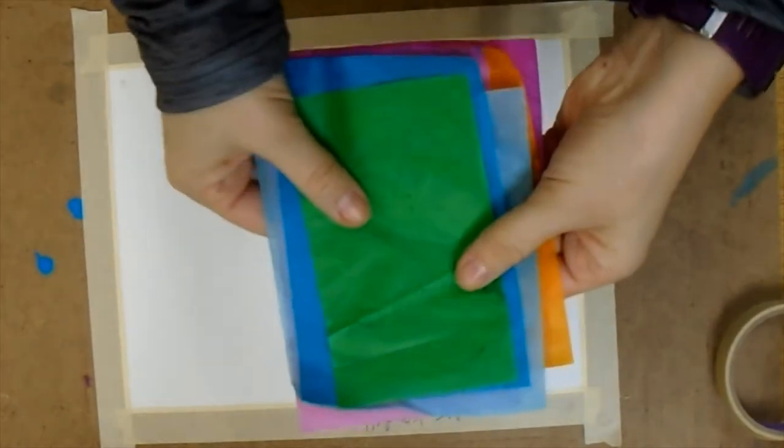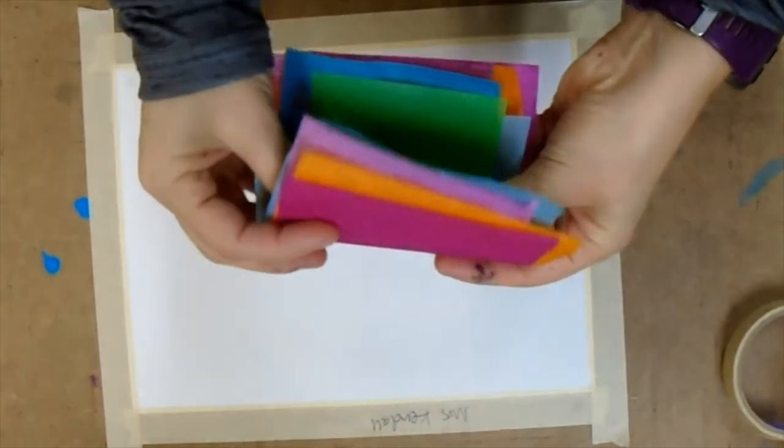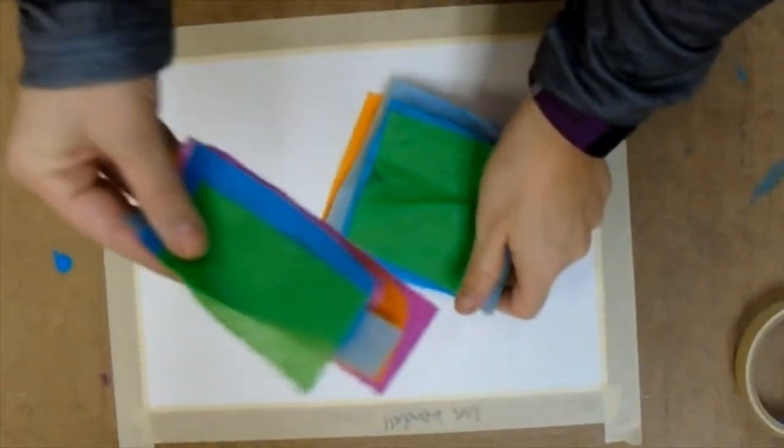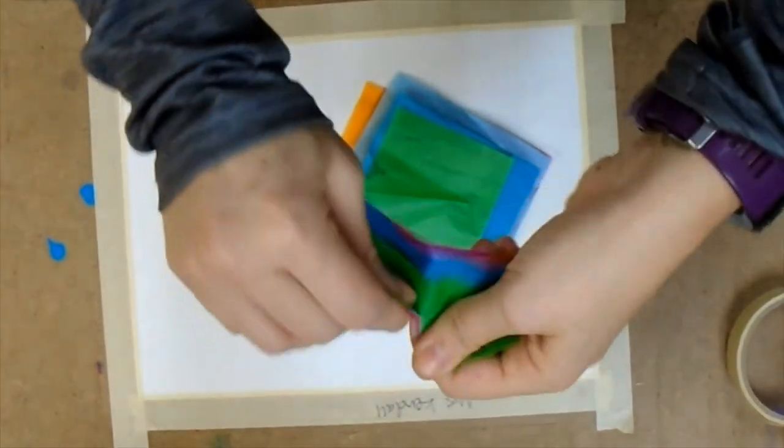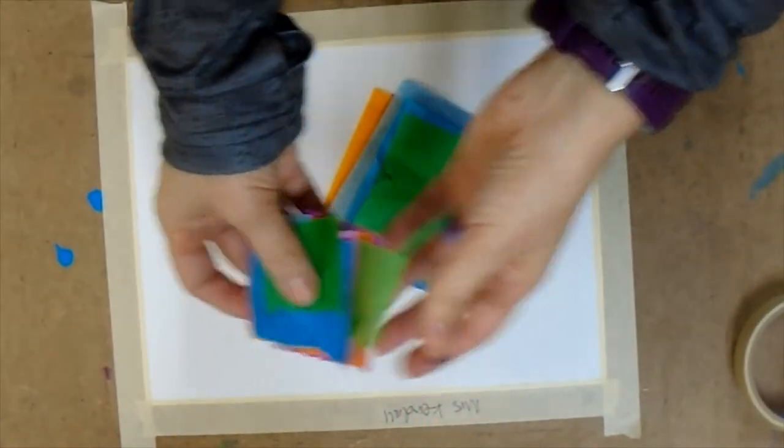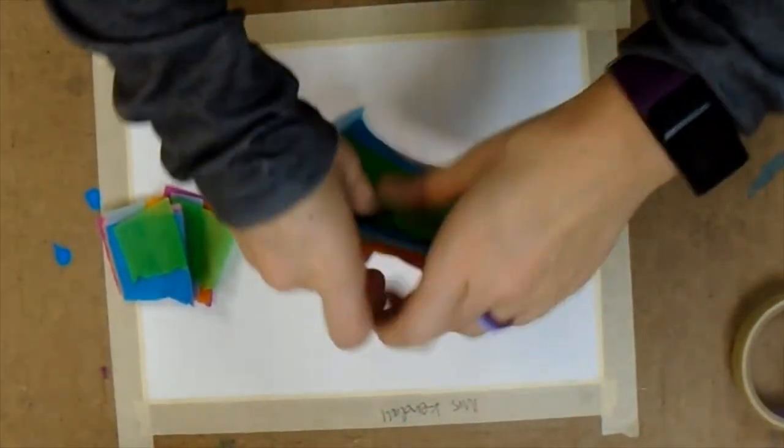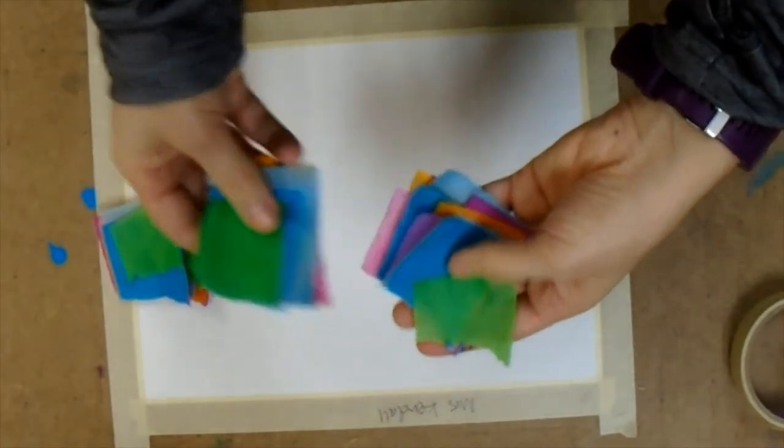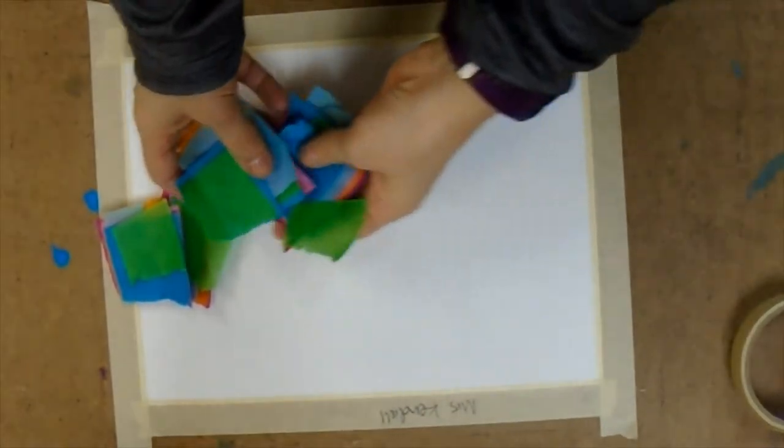Then you're just going to tear them into smaller pieces. And I had a student one year compare it to chicken nugget size and it made me laugh. But I'm like, yep, that's a good comparison. So you're just tearing it down into smaller pieces. Do not worry if these are not perfectly the same size. It's not going to matter.